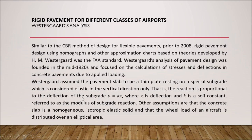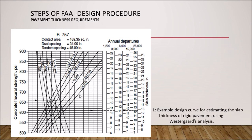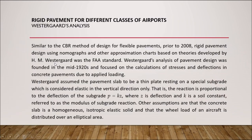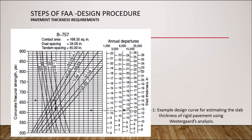Looking at the design graph, we have the concrete flexural strength in psi — pounds per square inch — on the left-hand side, with values from 500, 550, 600, 650, 750, up to 900. On the graph we also have the k value, which is the soil constant, with values of 50, 100, 200, 300, and 500.